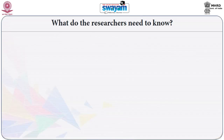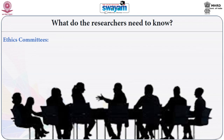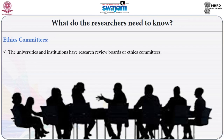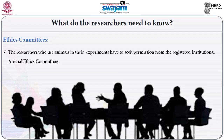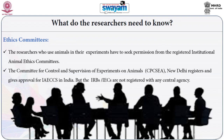The fourth aspect is ethics committees. Universities and institutions have research review boards or ethics committees. These boards and committees advise researchers on all issues pertaining to the safety and welfare of the subjects or human participants. Researchers who use animals in their experiments have to seek permission from the registered Institutional Animal Ethics Committees (IAEC). The Committee for the Purpose of Control and Supervision of Experiments on Animals, that is CPCSEA, New Delhi, registers and gives approval for IAECs in India.